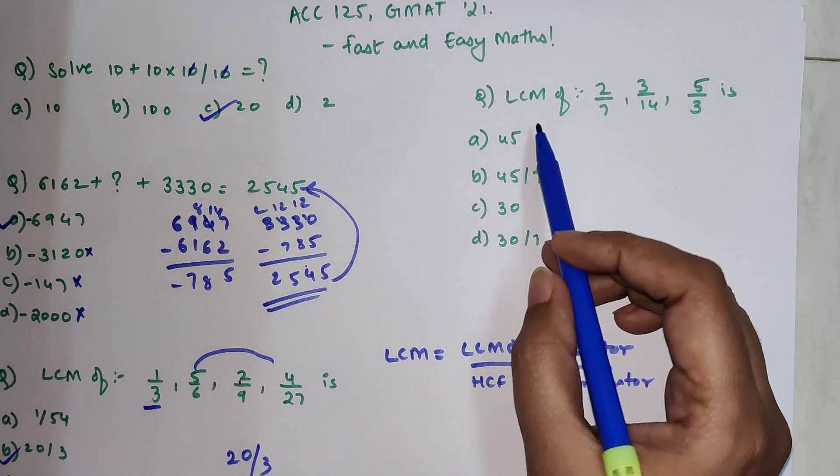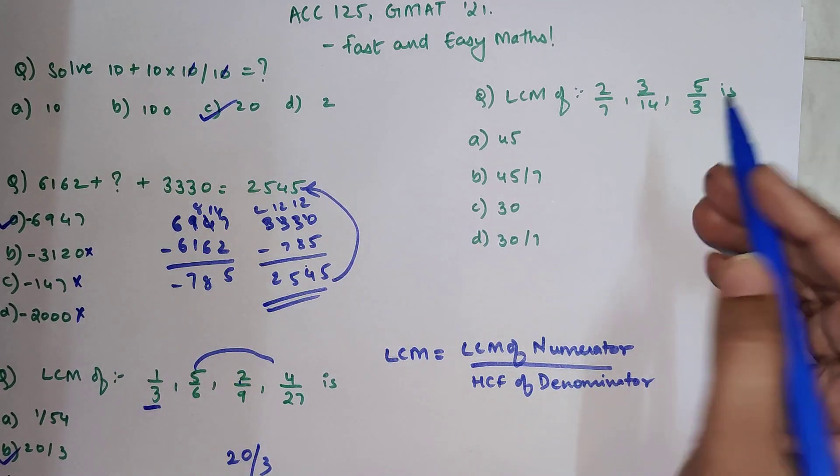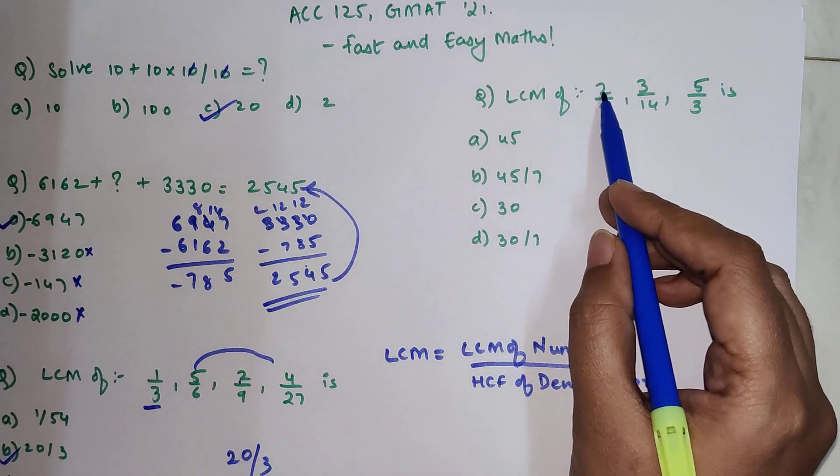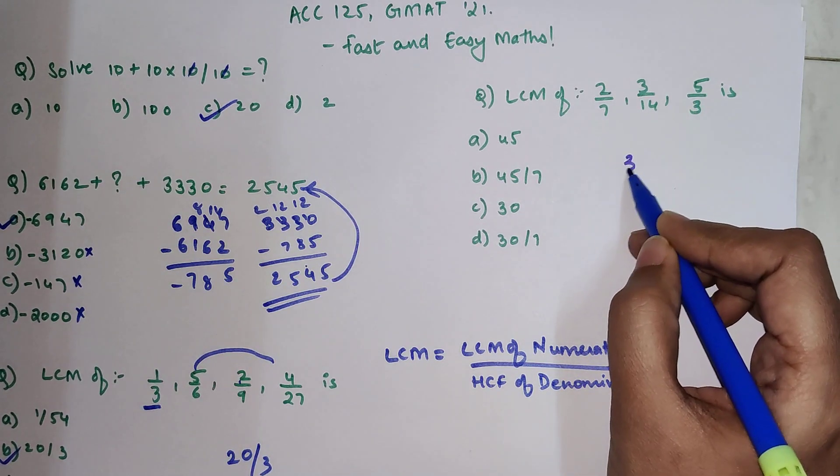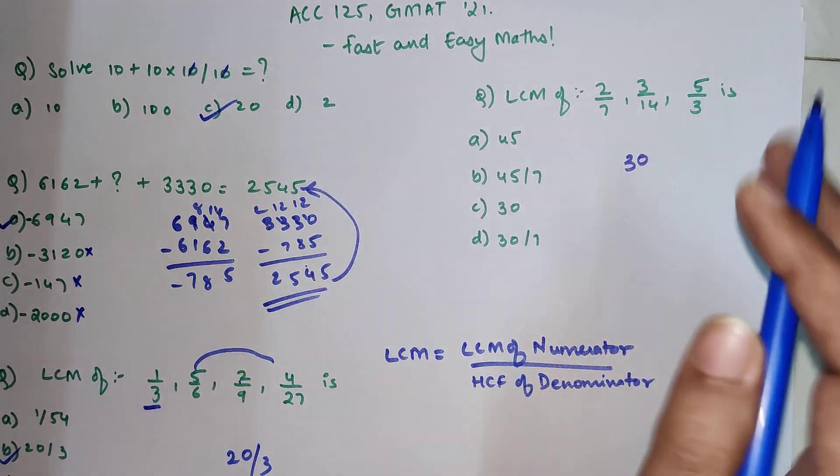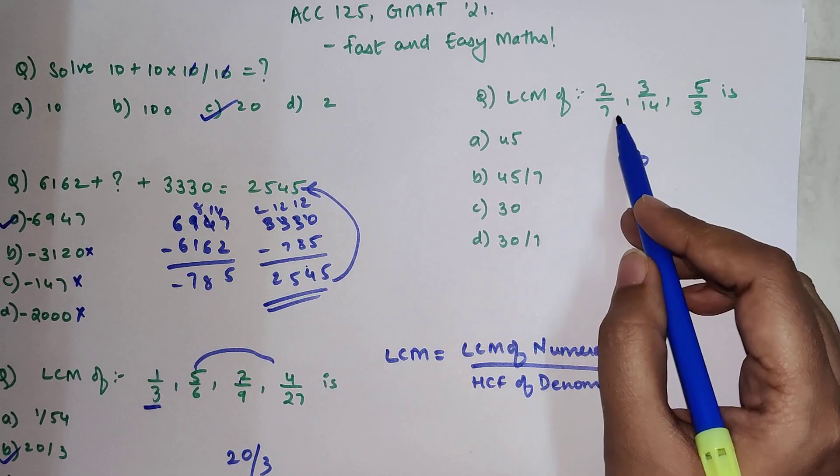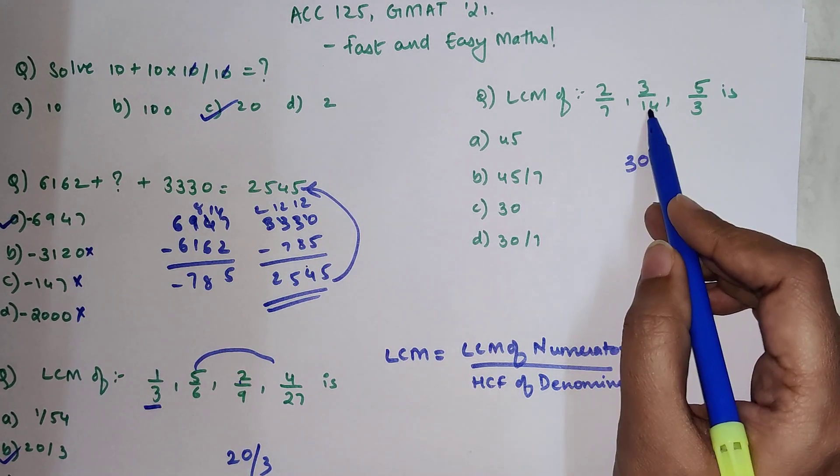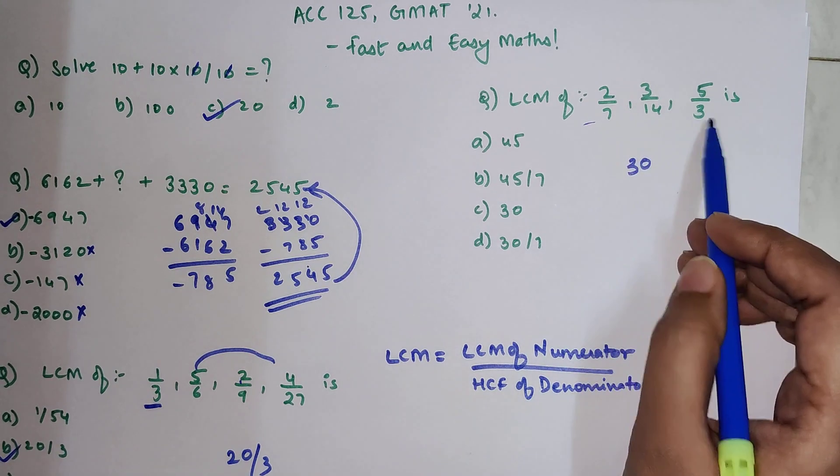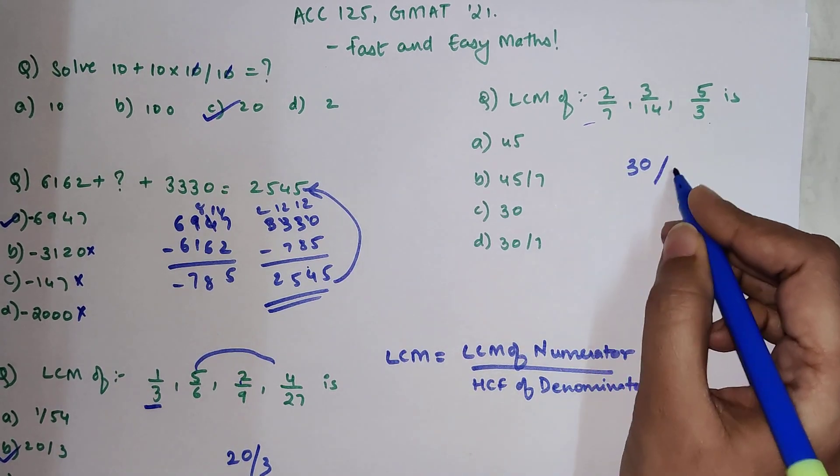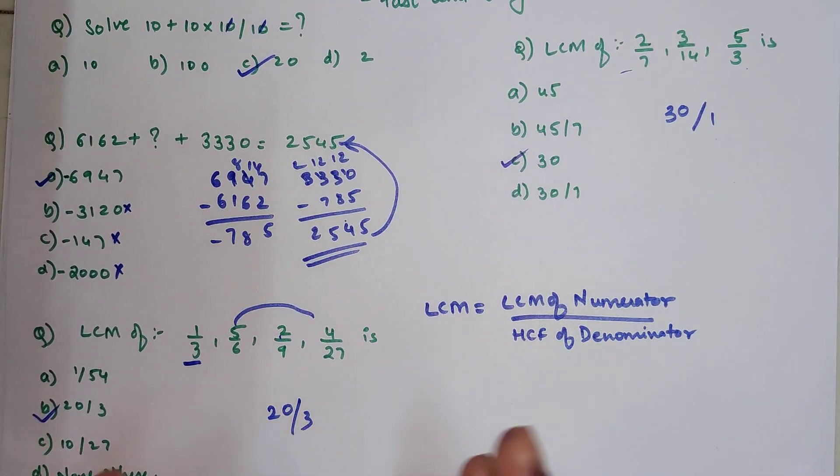Now for here, this one we have LCM of 2 upon 7, 3 upon 14 and 5 upon 3. So what happens over here is, what is the LCM is 2 into 3, which is 6 into 5, which is going to be 30. Why? Because all of them are prime, we directly multiply them. Now if you look over here, what is your HCF? Now understand, 7 and 14 had 7, but then another number which is coming over here is 3. So now we have nothing which is common between them, so it is just 1. So your final answer is just 30. But now I am sure that you might be wondering, what happens when it comes to HCF?